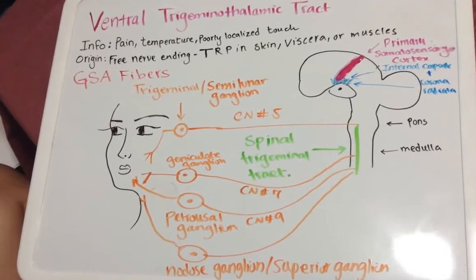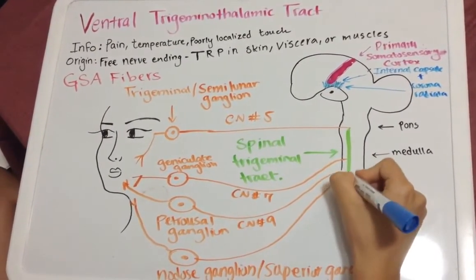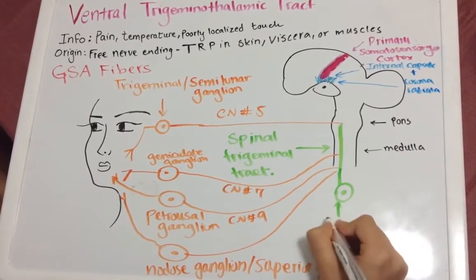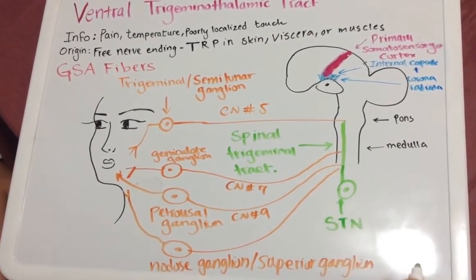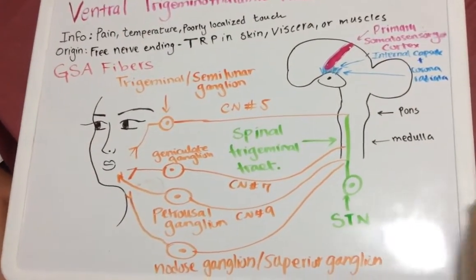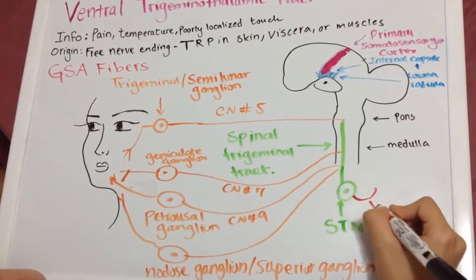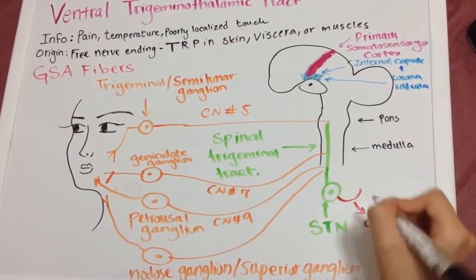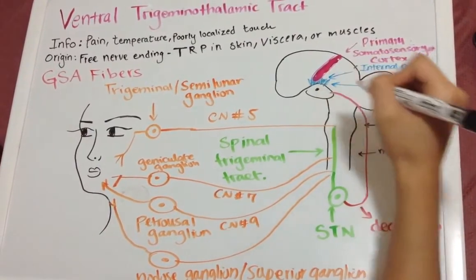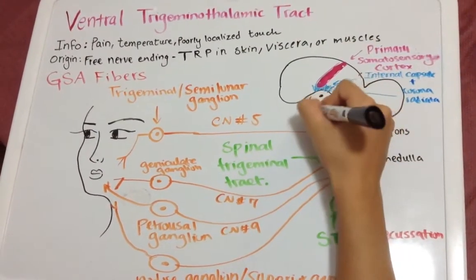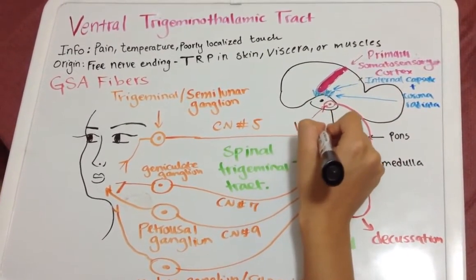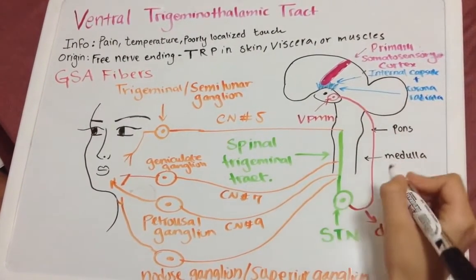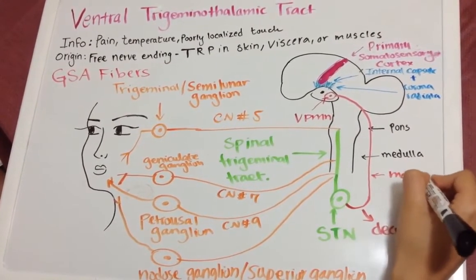All of these cranial nerves go inside this tract, and they will synapse at a nucleus called the spinal trigeminal nucleus — I'll just put STN. Once it synapses here, it will decussate right after, in the caudal medulla, and it will go up and synapse in the VPM — the ventral posteromedial nucleus — inside the thalamus, via the medial lemniscus.